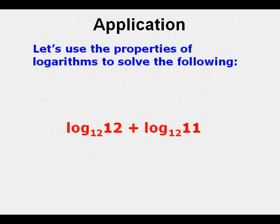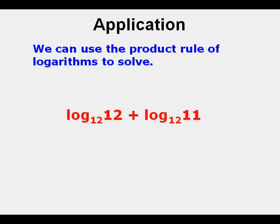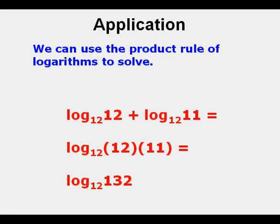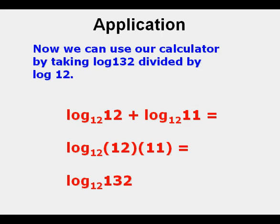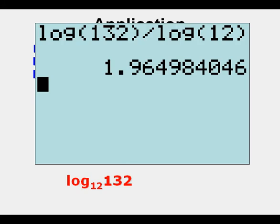We have log base 12 of 12 plus log base 12 of 11, and we can use the product rule of logarithms to solve it. We multiply 12 and 11 together and it becomes log base 12 of 132. We can use our calculator to check by taking log 132 divided by log 12, and we get 1.965.